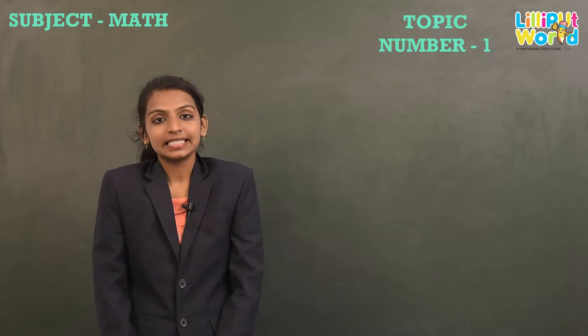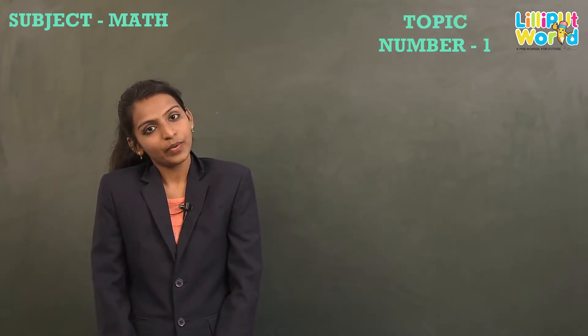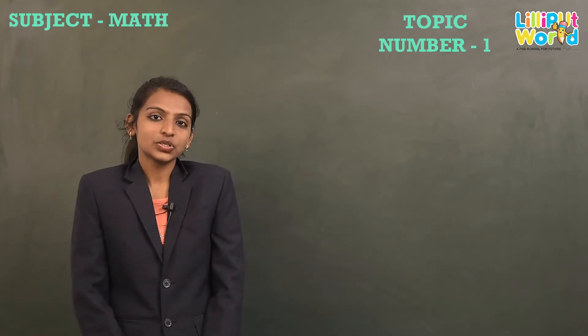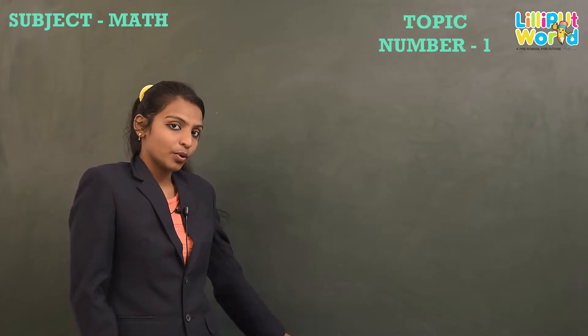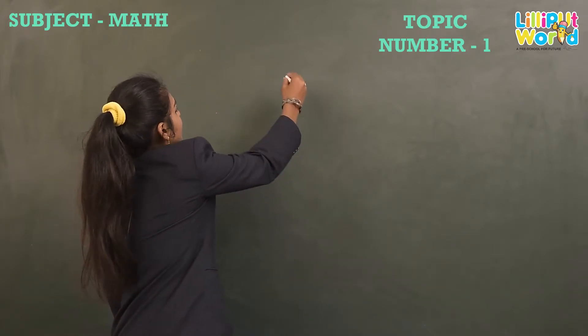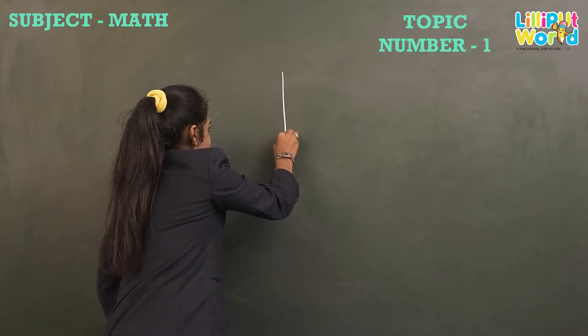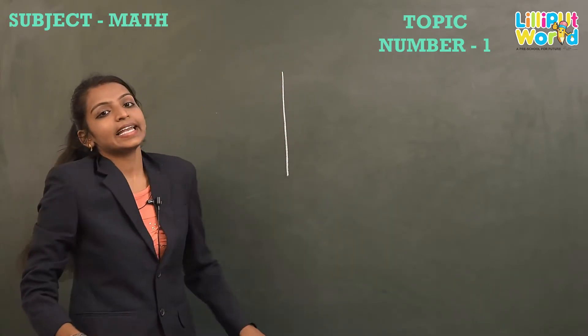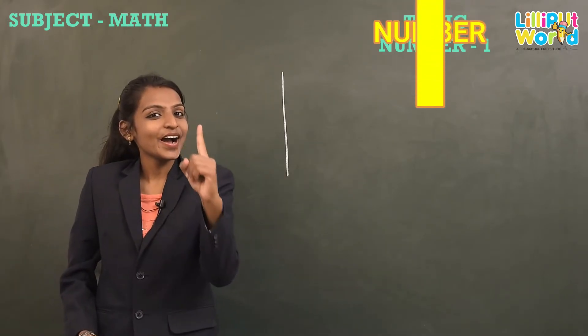Now come on, first take your slate and practice number one. Let's do it in slate first, and Miss will show you on the board. From up to down, a standing line - this is number one.